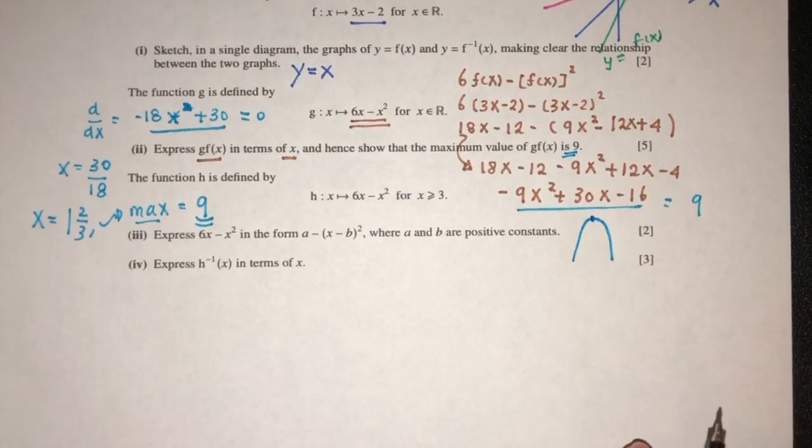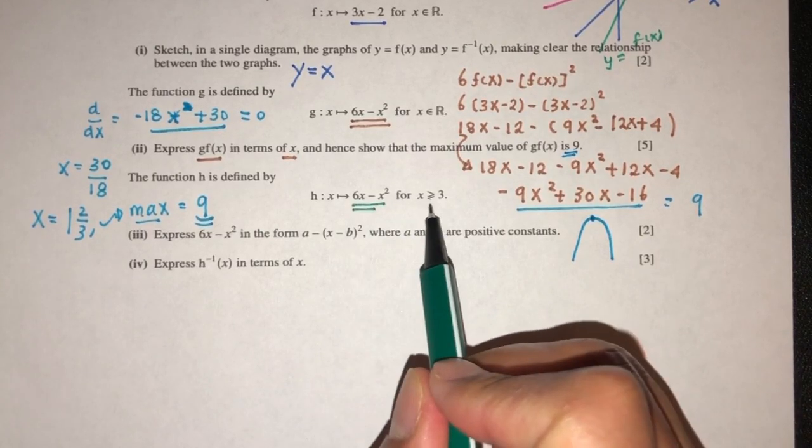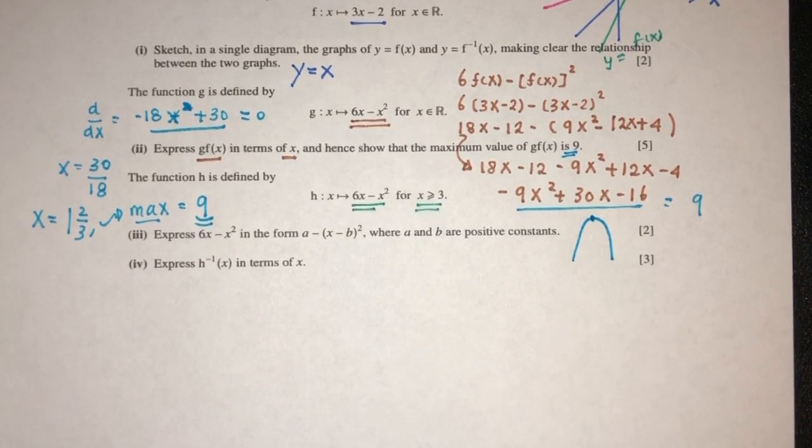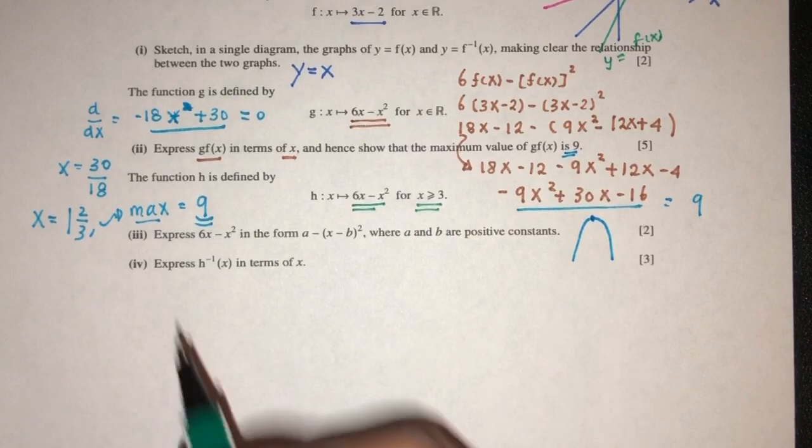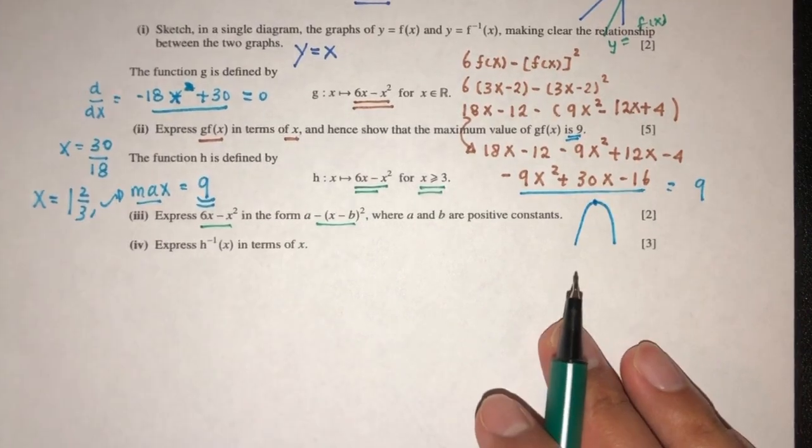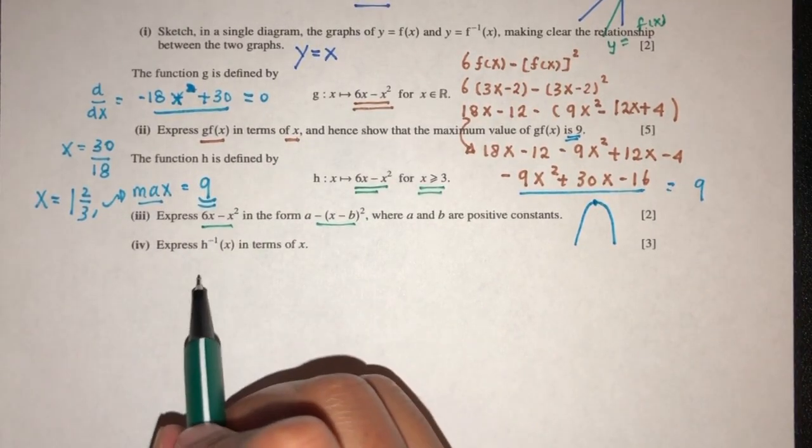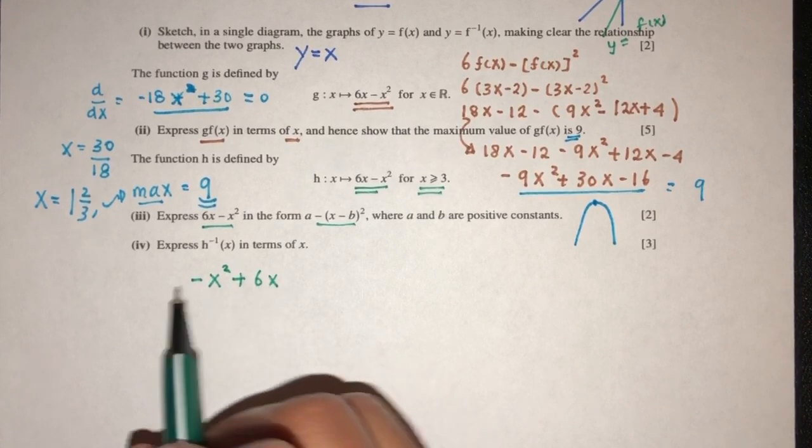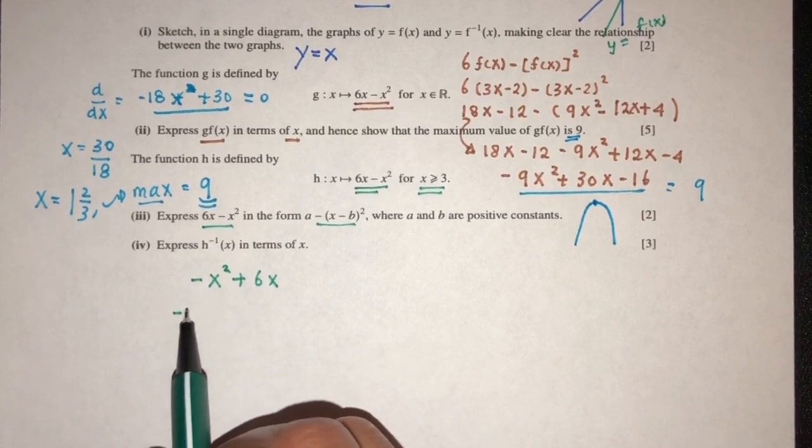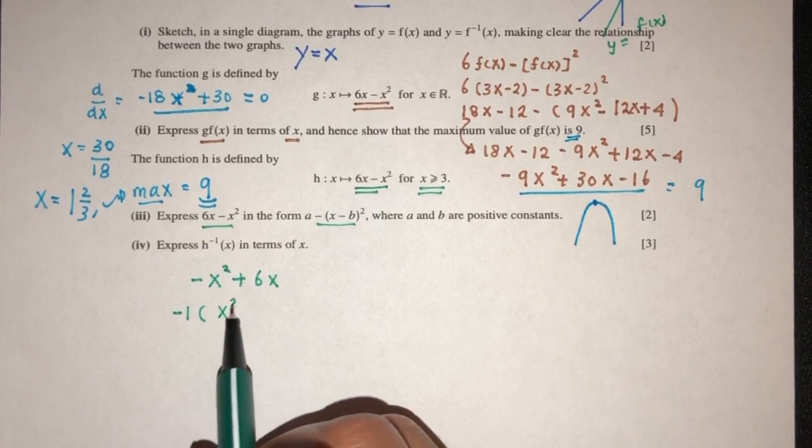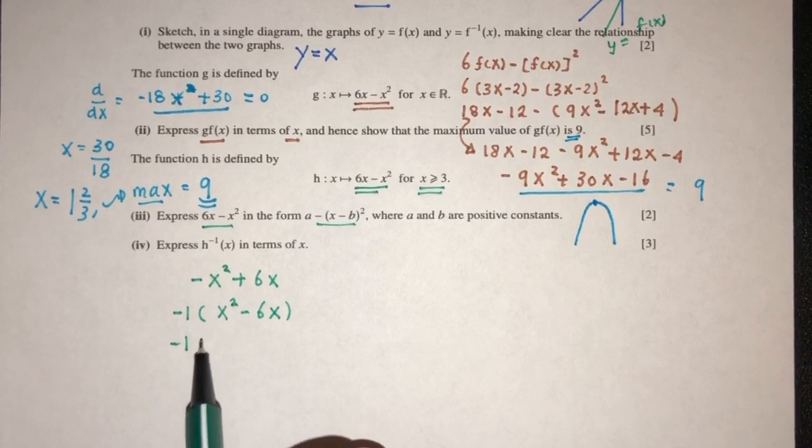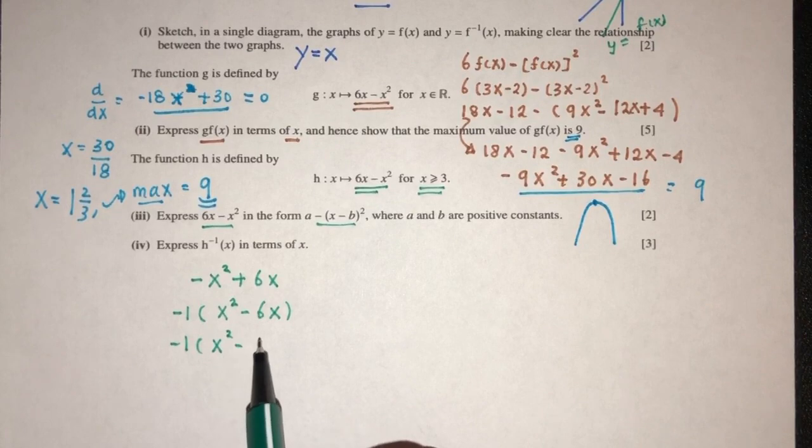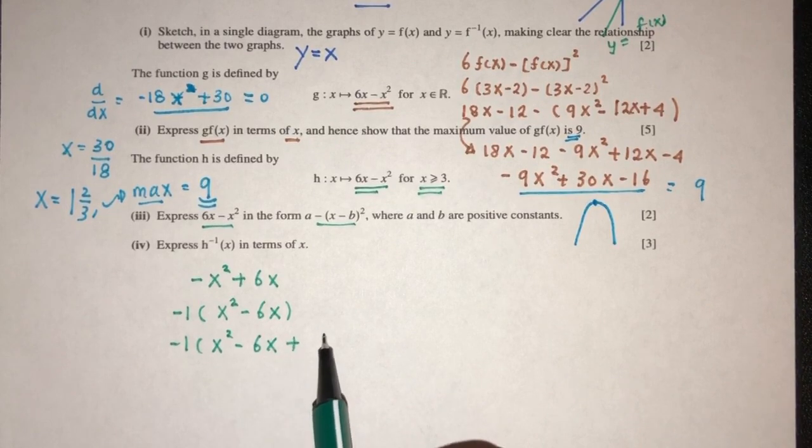Now for part 3, we have the function h is defined by this, for x more than 3. We have to express this in terms of this. So step by step. First we have to rewrite this as minus x^2 plus 6x. Let's make this become 1. That will be factorized as x^2 minus 6x. Then we have x^2 minus 6x plus the value of, the value here is 6 over 2 squared.